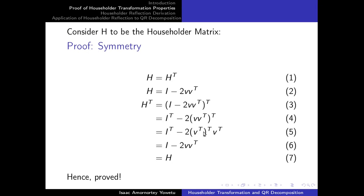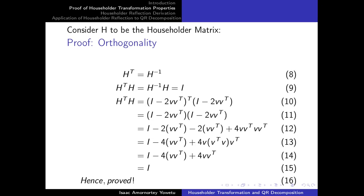Notice that V transpose transpose gives you back your original V. When you transpose a vector or matrix and then transpose it again, it brings you back to the original. Also, I transpose, where I is the identity matrix, gives you back the original I — nothing changes. So from equation 5 we obtain equation 6, which is the same as equation 2, confirming that H transpose equals H. Hence, the Householder matrix is indeed symmetric.